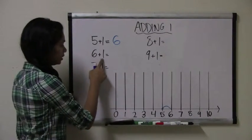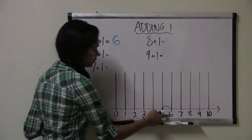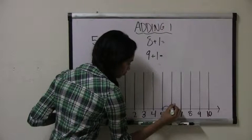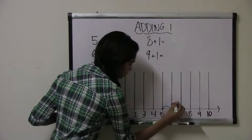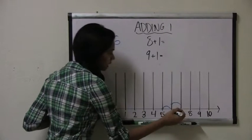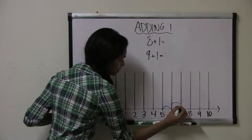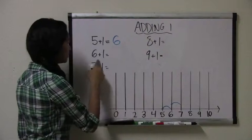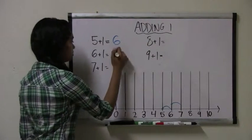Let's try 6 plus 1. This time we start with the number 6 and we jump one spot. 1. And we land on the number 7. So 6 plus 1 equals 7.